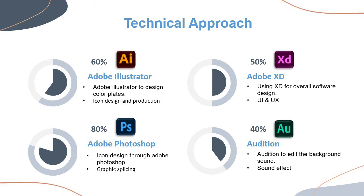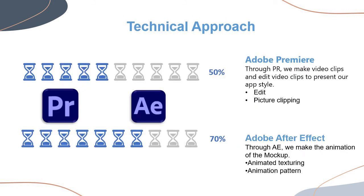We used Illustrator to design illustrations and color palettes at the beginning of our production. Adobe XD is used to design user interaction — line drawings, interface models, and user interaction flows are all completed here. Photoshop is used to make icons and Halloween elements, and most images are made there. For sound effects, we use Audition, which is very convenient for processing background music and sound effects. The most important prototype video was produced using Premiere and After Effects — After Effects for video backgrounds, transition effects, and animation effects, and Premiere to combine all the materials including illustrations, models, and animation effects.